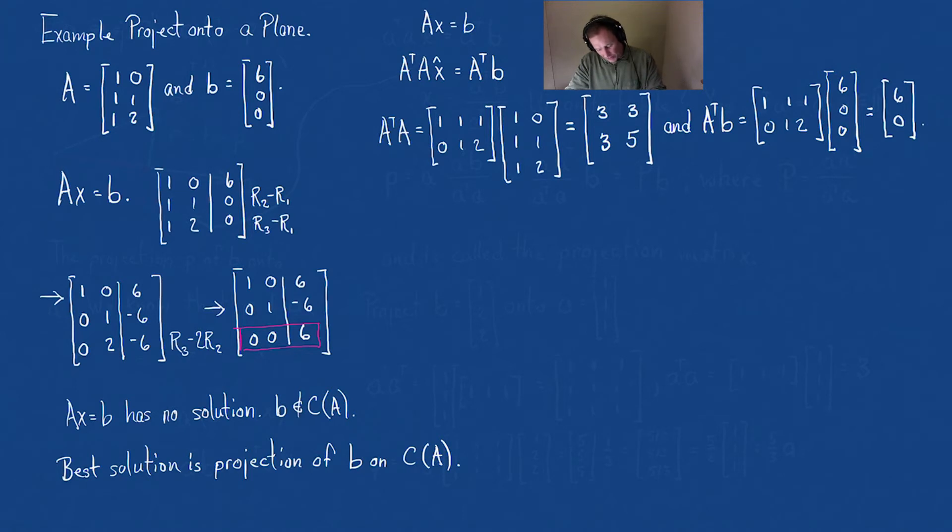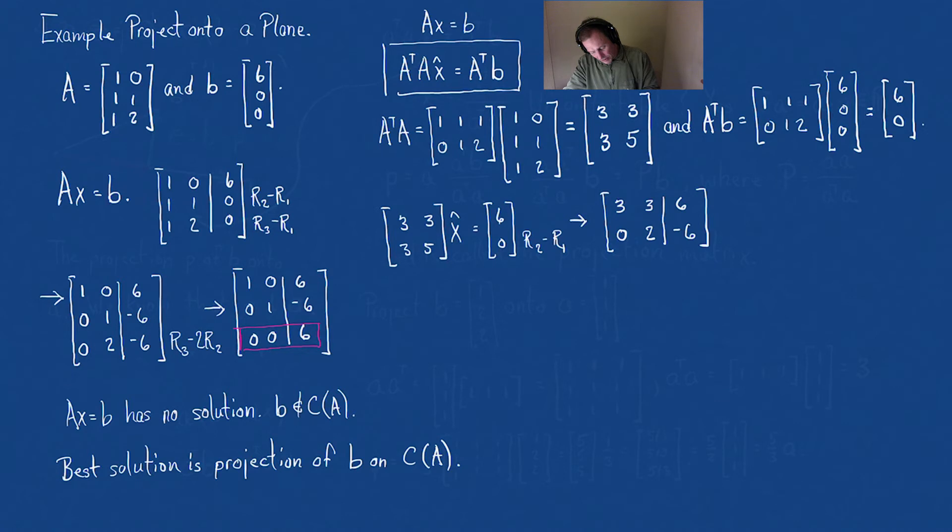Now let's set up this projection matrix equation. This says that [3,3; 3,5] times x hat equals [6; 0]. If we put this into an augmented matrix and take row 2 minus row 1, this gives me [3,3,6; 0,2,-6]. And then this becomes [1,1,2; 0,1,-3].